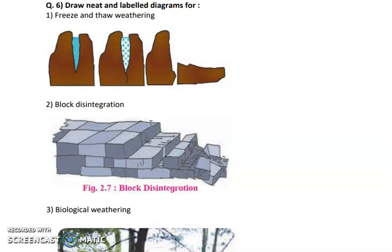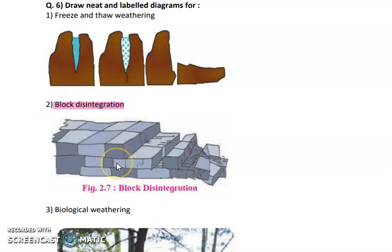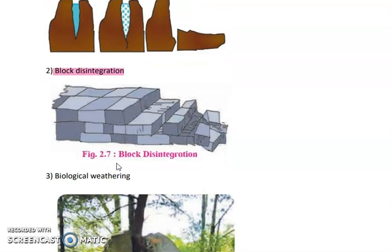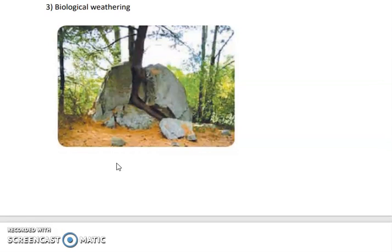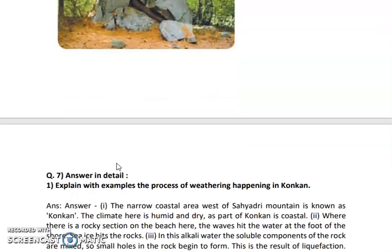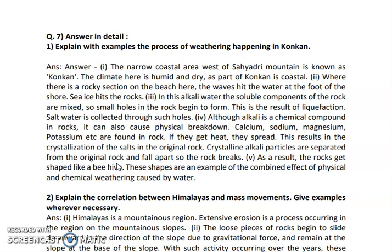Next is question number 6 — draw neat and labelled diagrams. The first diagram is regarding freeze-and-thaw weathering, as given in your textbook. The second one is block disintegration — you can see several types of blocks on the rock, and block by block at each joint there is weathering and separation of blocks. Next is biological weathering — this diagram is also present in the book, or you can draw any type of animal burrowing, which is also one form of biological weathering.